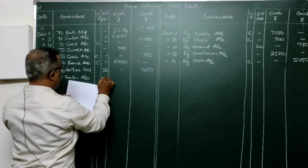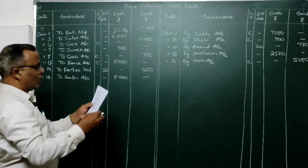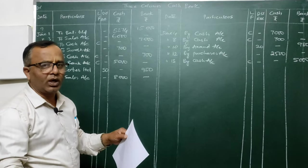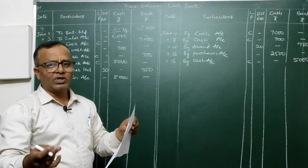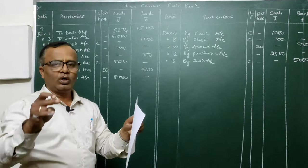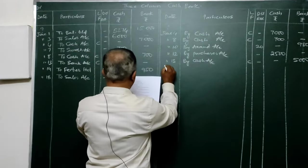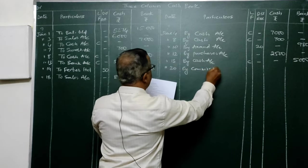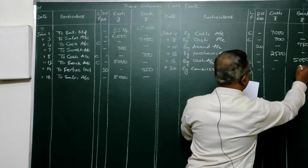On the 20th: paid commission to Raju by check. Entry: Commission Account Dr. To Bank. Post 'By Commission Account' on the credit side in the bank column — 200. On the 21st: cash paid for stationery. Entry: Stationery Account Dr. To Cash. Post 'By Stationery' on the credit side in the cash column — 100.